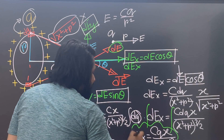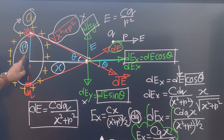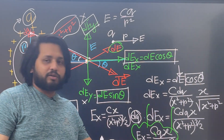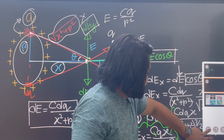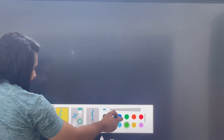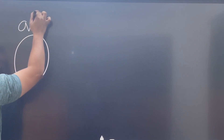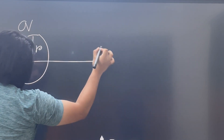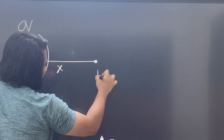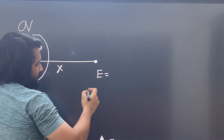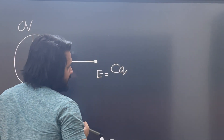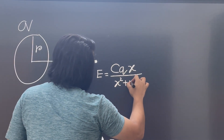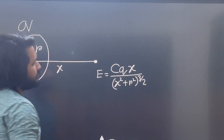So the electric field on the axis of a ring of charge is: E = k·Q·x divided by (x squared plus R squared) to the power 3/2. This is Coulomb's constant times total charge times x, all over (x² + R²)^(3/2).